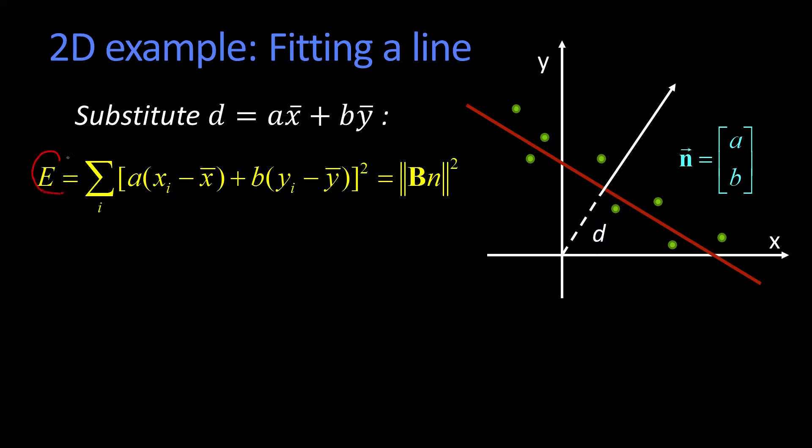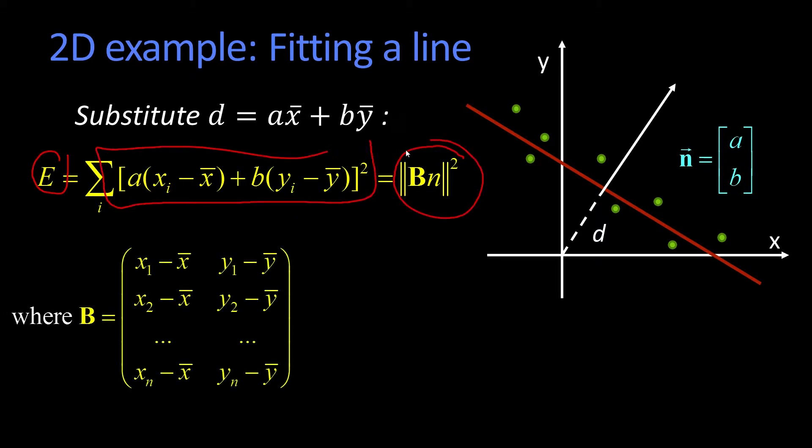We get this new error function E, just having substituted, and we wrote it this way. And this is where B is this matrix here. You can see it's just the X's and Y's in rows with the mean subtracted.